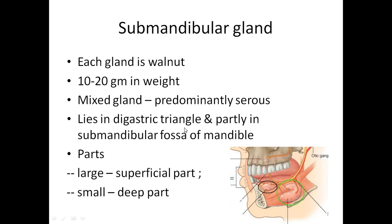As already stated, the gland lies in the digastric triangle. It is partly related to the inner surface of the mandible just below the mylohyoid line. There is a depression in the mandible because of this gland, called the submandibular fossa.